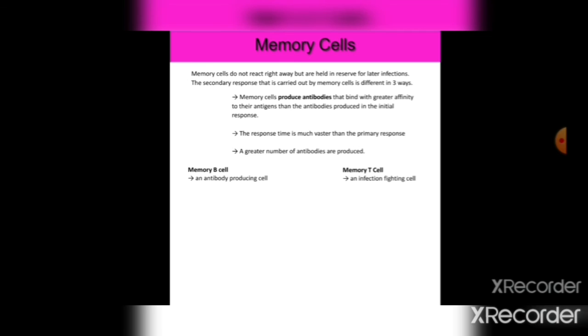The secondary immune response, carried out by memory cells, differs in three ways from the primary response: memory cells produce antibodies that bind with greater affinity to their antigens; the response time is much faster than the primary response; and a greater number of antibodies are produced. Memory B cells and antibodies are produced, and memory T cells are infection-fighting cells. This completes the overview of types of immune response.